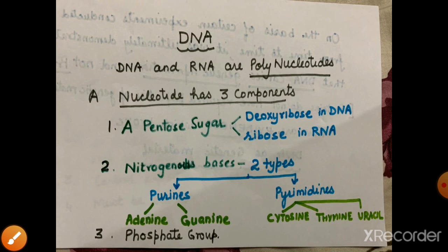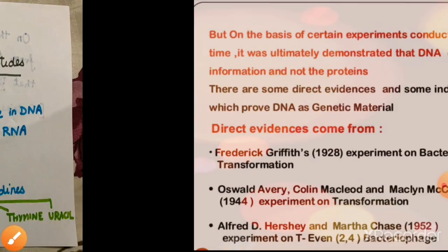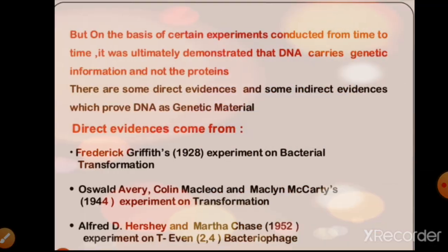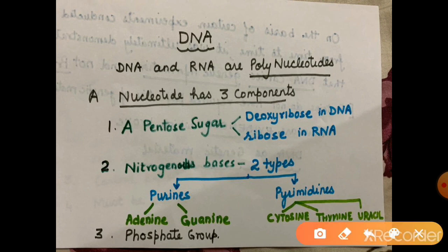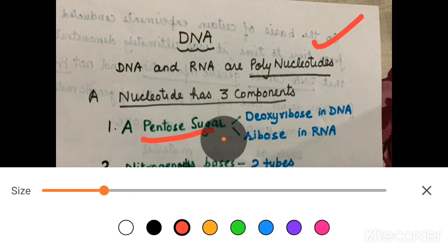So, DNA and RNA — they are polynucleotides. 'Poly' means they are made from a number of nucleotides; many nucleotides joined together form polynucleotides. Every nucleotide, students, has three components. First, there is a pentose sugar — a 5-carbon sugar.